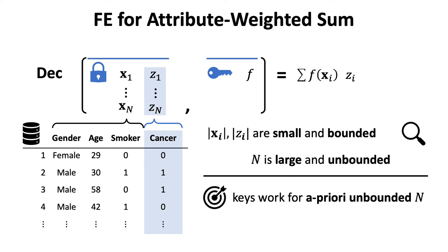We require that a secret key should be able to decrypt the ciphertext for any a priori unbounded n. This is called unbounded slot for short in this work.